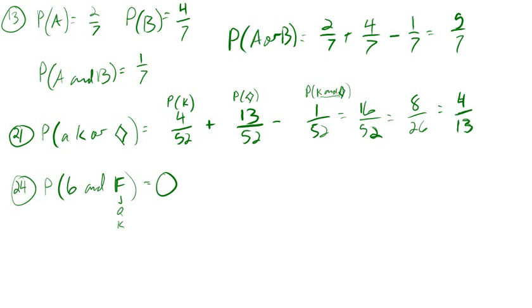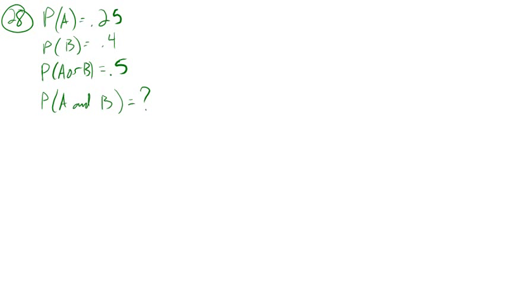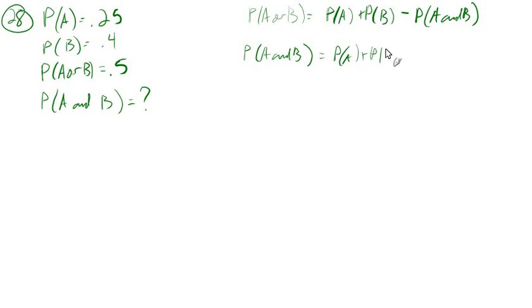At number 28 next, we are supposed to find the probability of A and B, so just remember the probability of A or B equals the probability of A plus the probability of B minus that intersection of A and B. So if we want to find A and B, let's just solve for A and B. So we'll add A and B to both sides, so we get the probability of A and B, and we'll subtract the probability of A or B from both sides, so we get the probability of A plus the probability of B minus the probability of A or B. So we'll just follow this formula to find A and B.